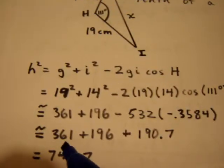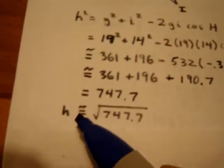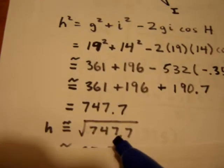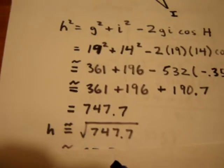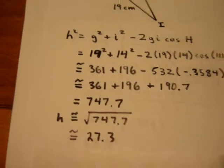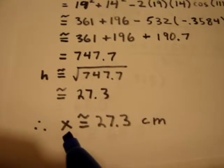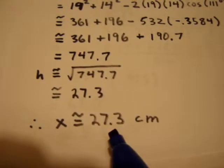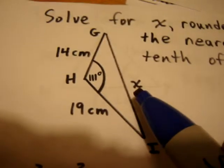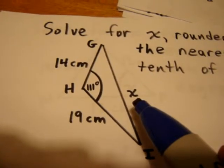So, I get that H squared is approximately equal to 747.7, which means that H is approximately equal to the square root of 747.7, which is approximately 27.3. So, I can write that X, which is the quantity we were seeking, is approximately 27.3 centimeters. I might have said degrees earlier. I misspoke.